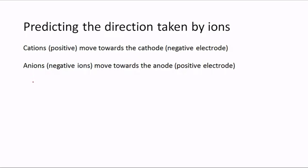You also need to be able to predict the direction taken by ions in solution. The positive ions, or cations, move towards the negative electrode — the cathode. Unlike charges attract, so think of it as the cation moving towards the cathode — both share 'Ca'. The negative ions, or anions, move towards the anode, which is the positive electrode.